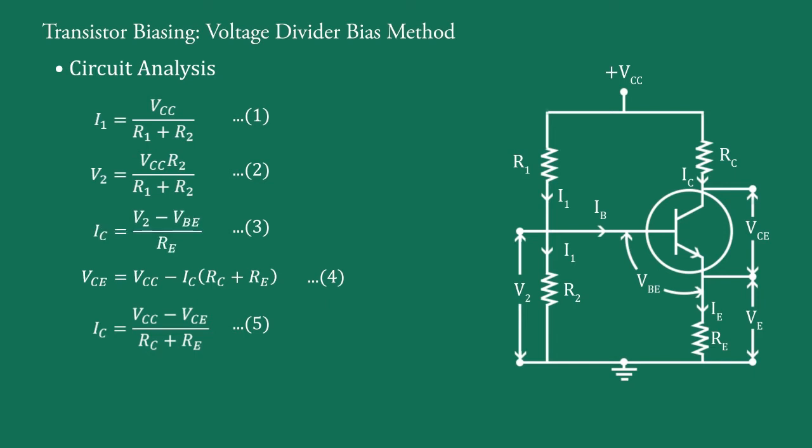Now, in these equations 3, 4 and 5, beta doesn't appear. It means there is no effect of beta on IC and VCE. Thus, operating point does not depend upon beta of transistor and remains same if we either replace the transistor by another transistor of same type.